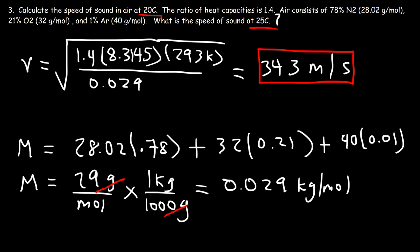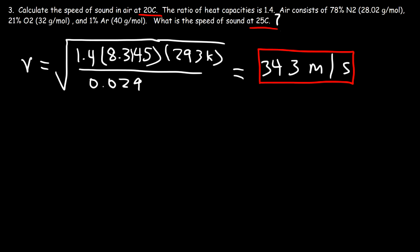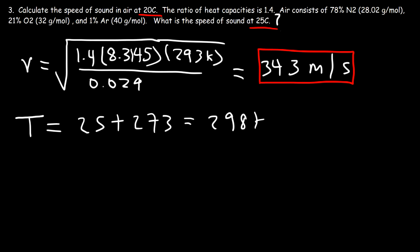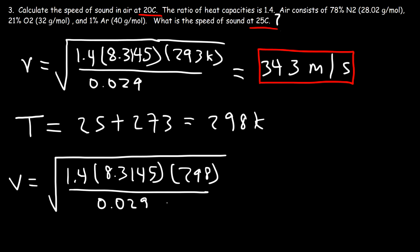Now let's find what it is at 25 degrees Celsius. The Kelvin temperature is 25 plus 273, which is 298 Kelvin. Everything else stays the same — just the new temperature is plugged in — and this gives 346 meters per second.